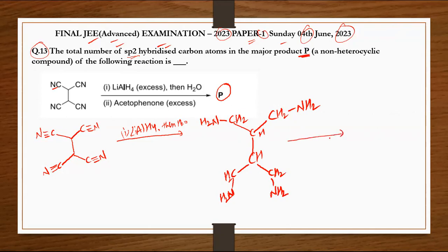Now we need to add acetophenone to this, that is CH3-CO-phenyl. The phenyl group, as you know, is benzene which already has 6 sp2 hybridized carbons.